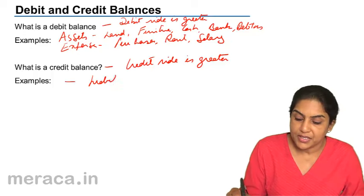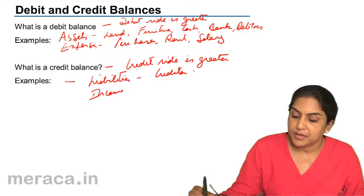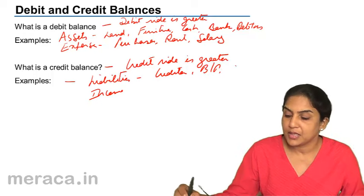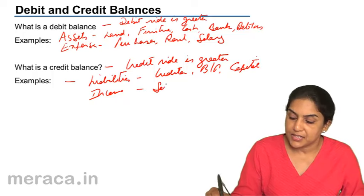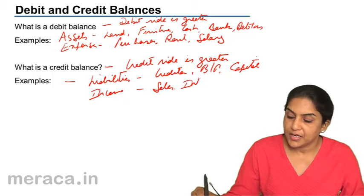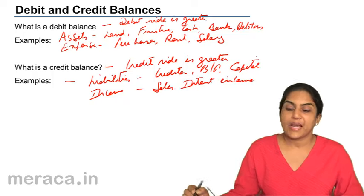There would be liabilities and there would be incomes. Purchases, creditors, bills payable, capital, sales, interest income, etc.